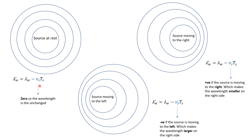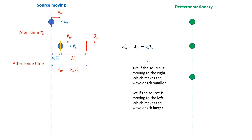If you apply the formula when the source is at rest, v_s is zero and of course there's no change in wavelength. So we have three situations: source at rest, source moving to the right, or source moving to the left. The wavelength gets smaller or larger depending on which direction the source is moving.